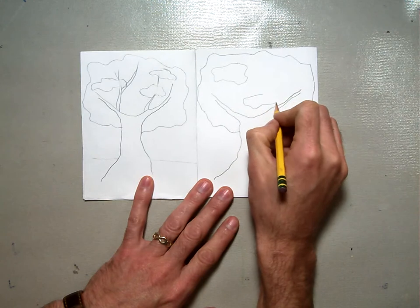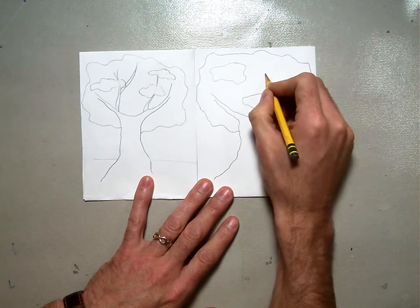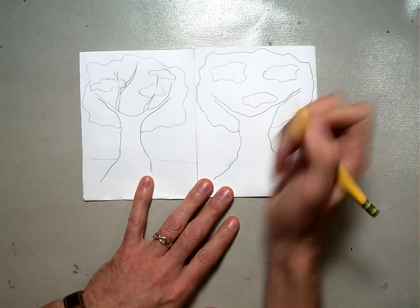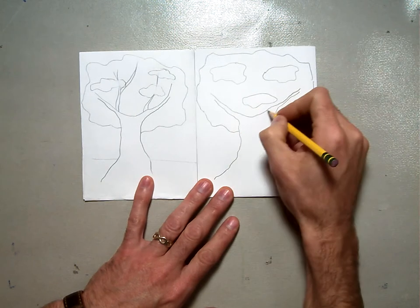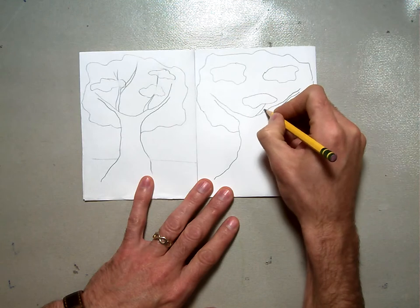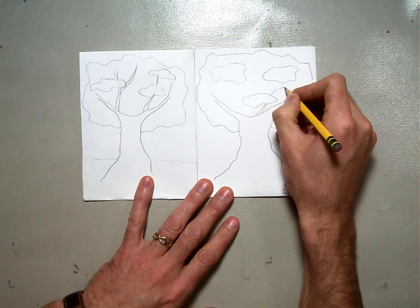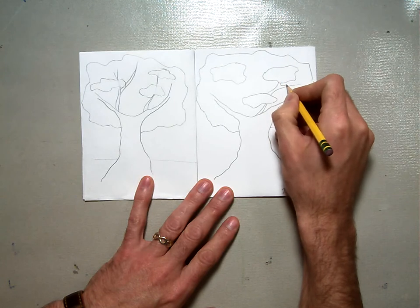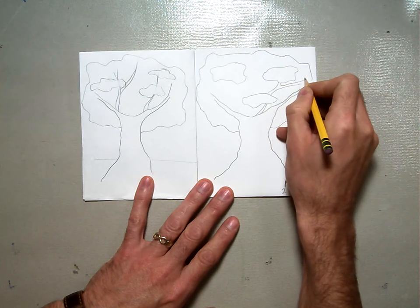And these are going to be like the little puffs that are in the front and then you can take some branches and overlap them behind those little puffs.